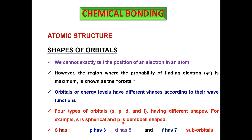Each orbital can be subdivided into sub-orbitals: S has 1 sub-orbital, P has 3, D has 5, and F has 7. Each sub-orbital can be occupied by 2 electrons. Therefore, S can hold a maximum of 2 electrons, P can hold 6, D can hold 10, and F can accommodate 14 electrons in total.